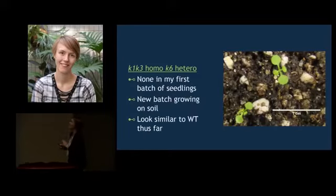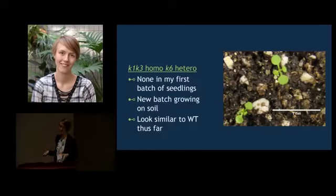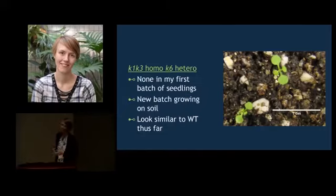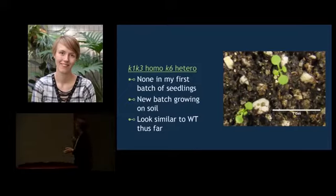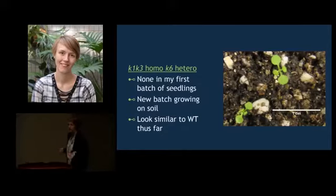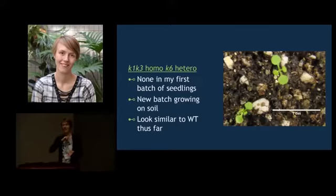Unfortunately, none of my first batch of seedlings were K6 heterozygous, which is very unfortunate because I really wanted to study those. To remedy that, I recently sowed a new batch of seeds which should be K6 heterozygous. These are growing right now, looking comparable to wild type. They were sown directly on soil rather than on sucrose and they're doing pretty well. It remains to be seen if they continue to do well and if they can reproduce — that's for future work.